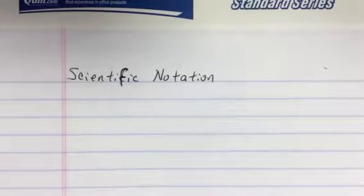Let's talk scientific notation. Scientific notation is a method where we can make very big numbers small or very small numbers bigger.